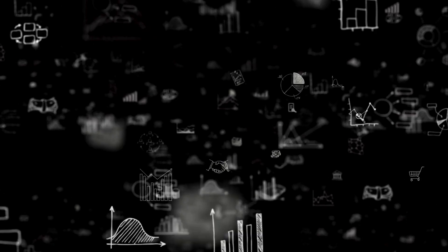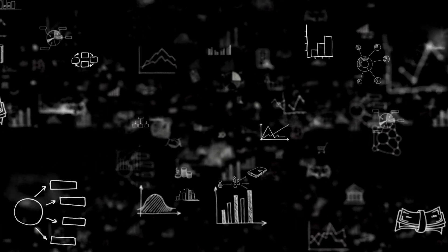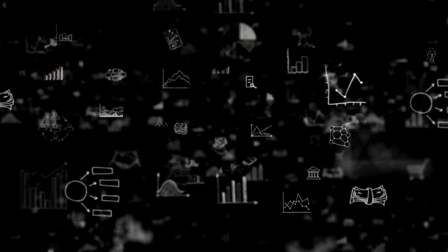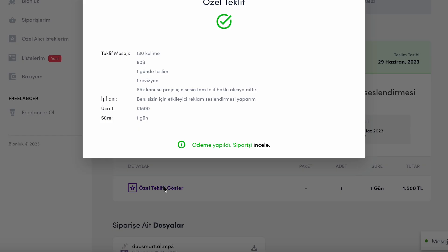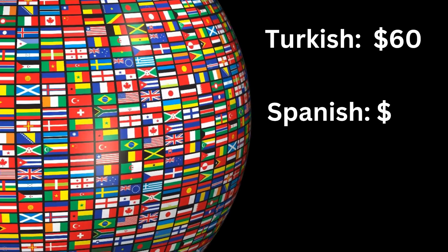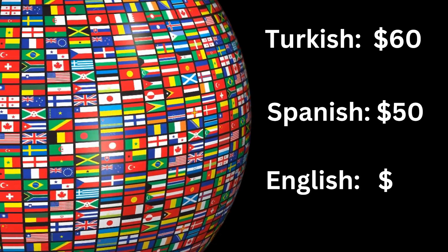Now let's take a quick look at the economics behind dubbing. For demonstration purposes, we manually dubbed our last video into Turkish, English, and Spanish using professional voice actors. For the Turkish version, we hired a voice actor through Fiverr. As you can see from the offer, it cost $60 for 130 characters in a 1 minute and 10 second video, and the project was completed 14 hours after payment. The Spanish voiceover cost $50, and the English voiceover came in at $80.